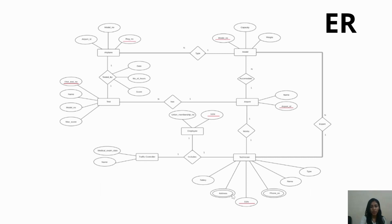The double ovals are the multivalued attributes. Address and phone number are the multivalued attributes of technician. The rhombus represents the relationship. The double line represents total participation. Each model will have one or more number of airplanes. Every airplane will have a model, but it is not necessary that for every model there will be an airplane, so total participation is shown only on this side.